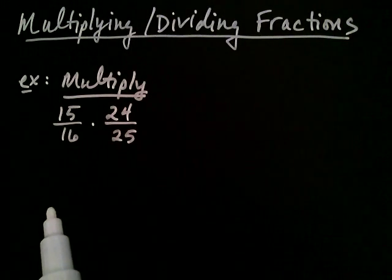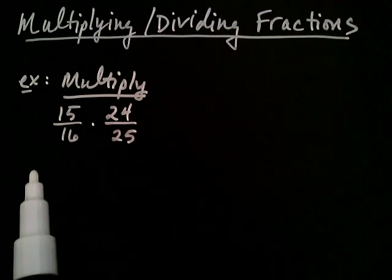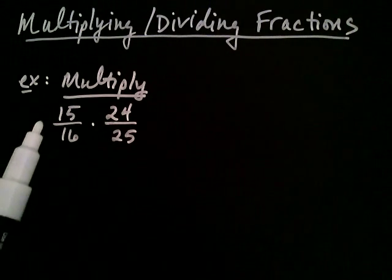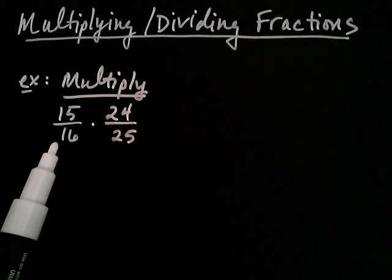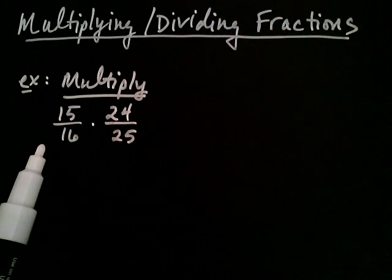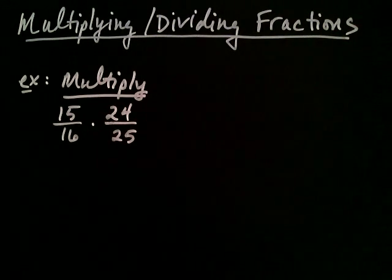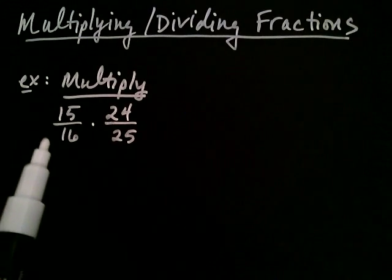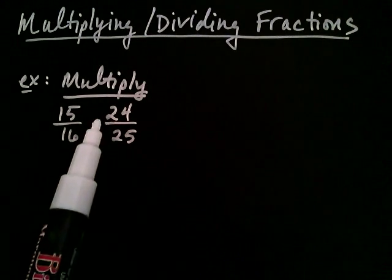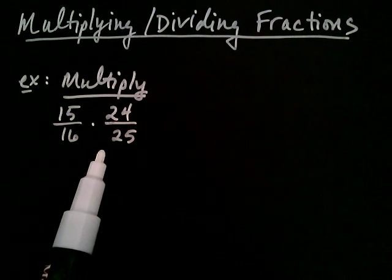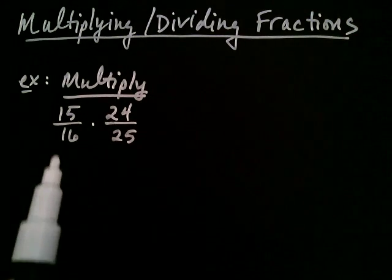When you're asked to multiply two fractions together, and the fractions have large numbers in the numerator and in the denominator, the easiest way to proceed is with finding the prime factorization of each number. What I'm going to do is take the 15 and the 16 and the 24 and the 25 and write them in terms of their prime factorization.